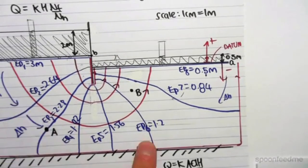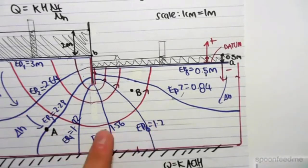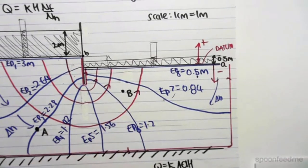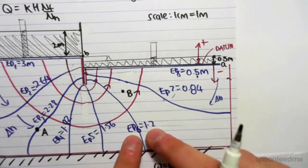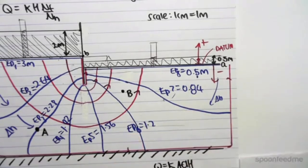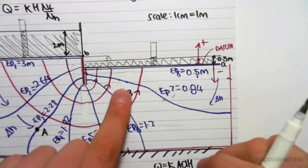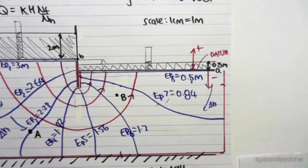We'd draw in all our EP values and find the head at B. Now B is not on an EP, but what we're going to do is average the equipotential values of head either side. That would give us B, because B is roughly between these two equipotential lines.